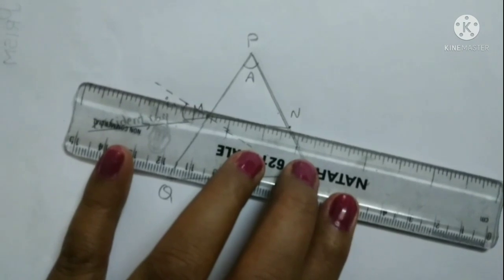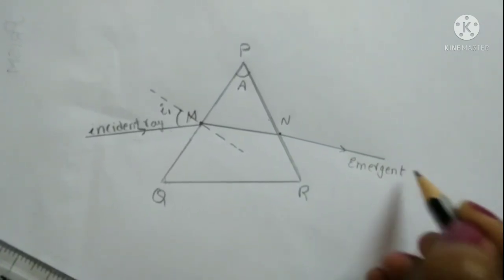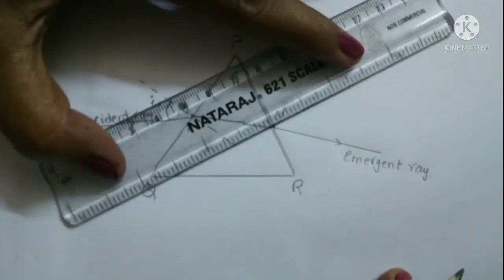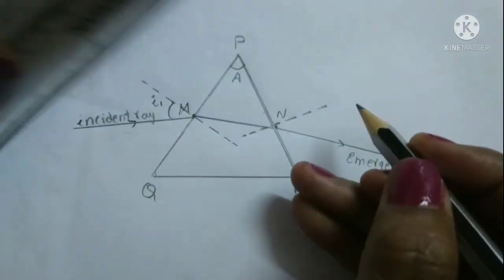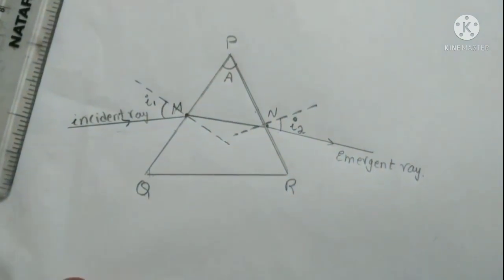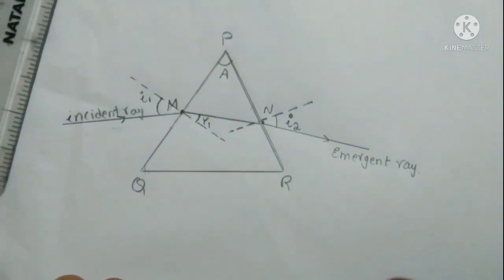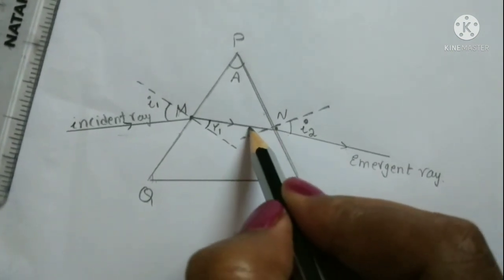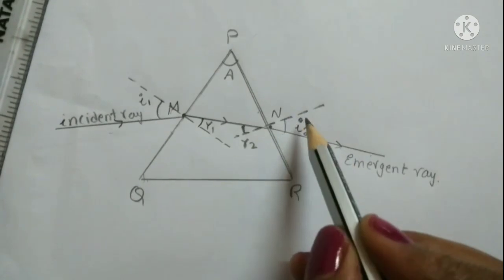From point N the ray emerges out — this is the emergent ray, which is the ray that comes out from the prism. At point N I draw a normal, which is always perpendicular to the plane surface. The angle between the normal and the emergent ray is the angle of emergence i2. The refracted angle at M is r1, and the ray inside the prism acts as the incident ray for the second surface, making angle r2 there.